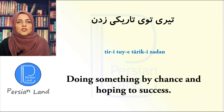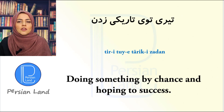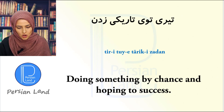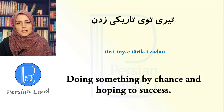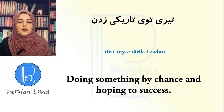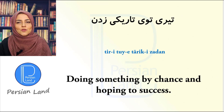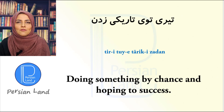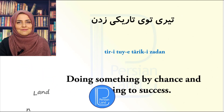تیری توی تاریکی زدن — shooting an arrow in the dark — means 'doing something by chance and hoping to succeed'. Thank you for watching this clip. I hope you liked it. Please subscribe to my channel and like this video. If you have any questions, please write them in the comments below. خداحافظ.